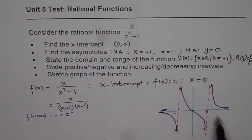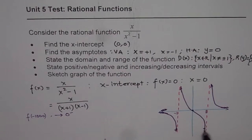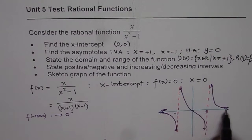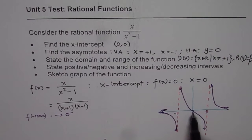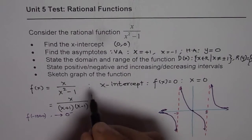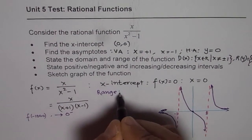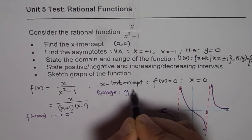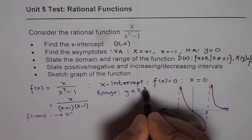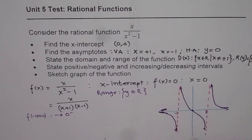So the graph of this function looks like this. You can now see that the range is all real numbers. Even though there is a horizontal asymptote, the graph passes through the origin so 0 is included. Therefore, the range for the function is y belongs to all real numbers.